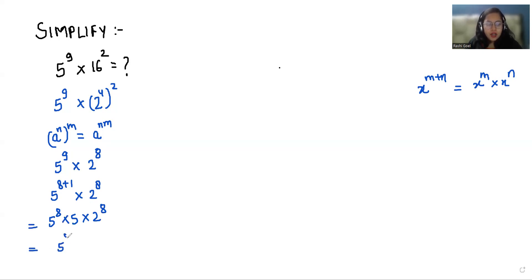So 5 power 8 times 2 power 8 times 5. According to exponent rule x power m times y power m we can write it as xy whole power m. So here we can write it as 2 times 5 whole power 8 times 5.